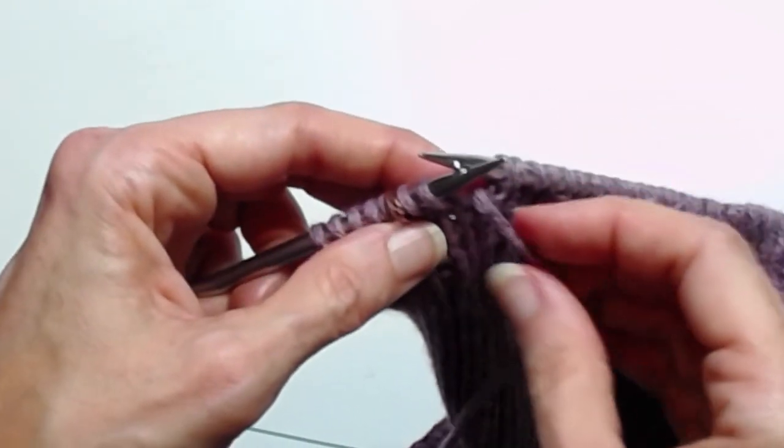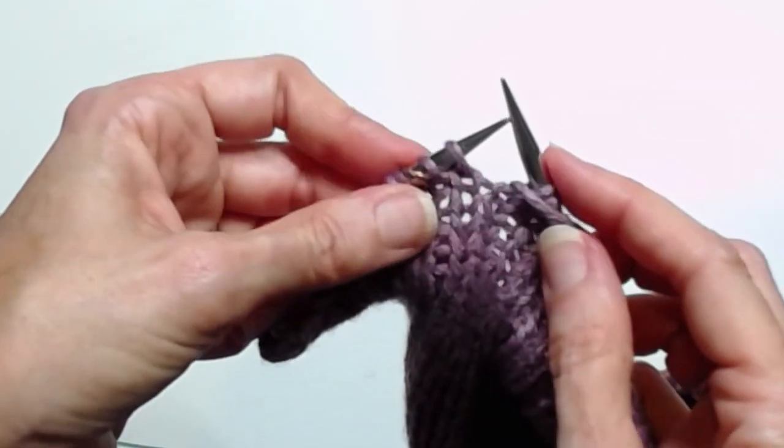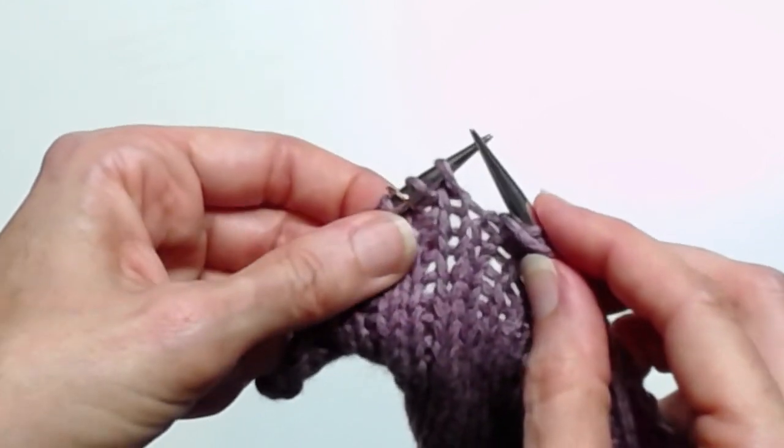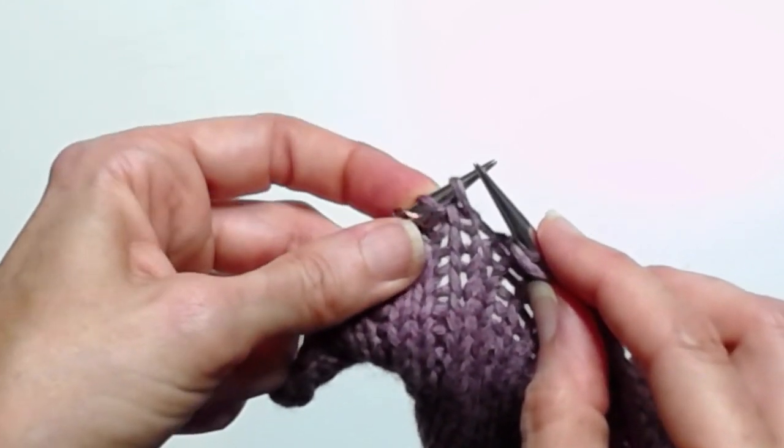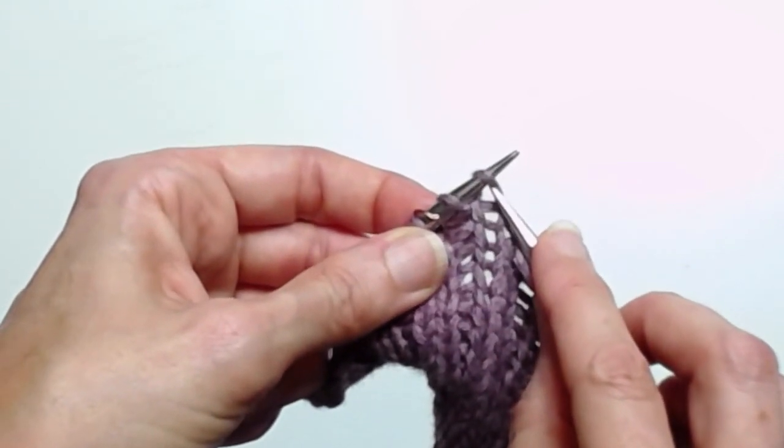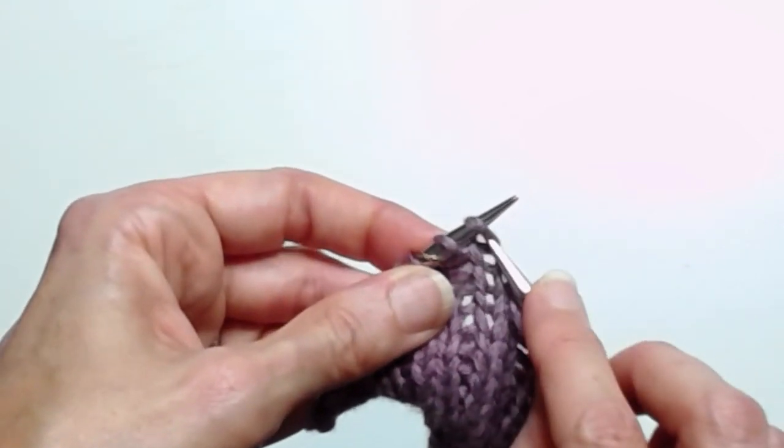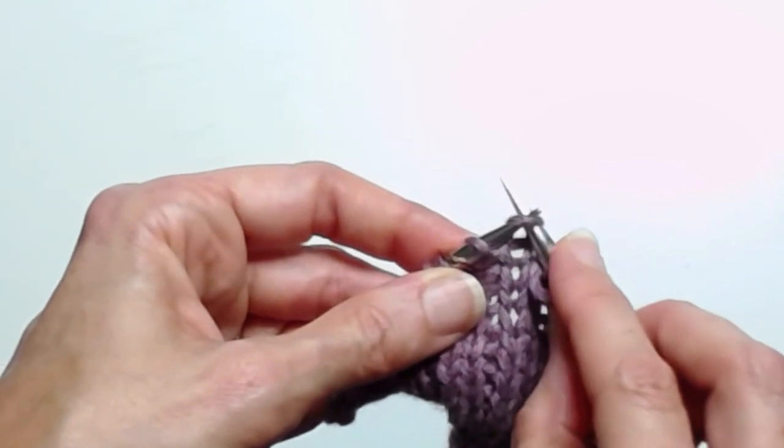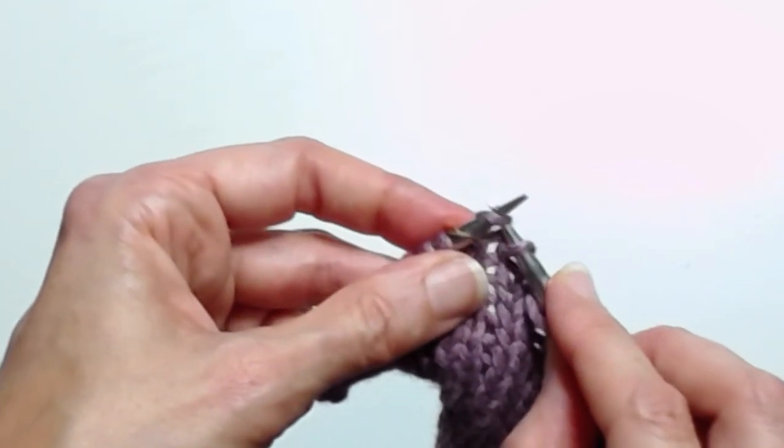I'm going to do it for throwing and then also for picking. So the first thing I need to do is reverse the stitch mounts of these two stitches by slipping them as if to knit, which means I insert my needle as if to knit and I slip one and I slip two.